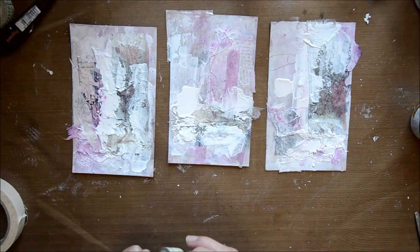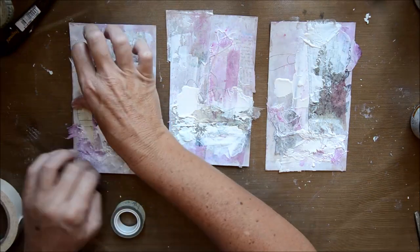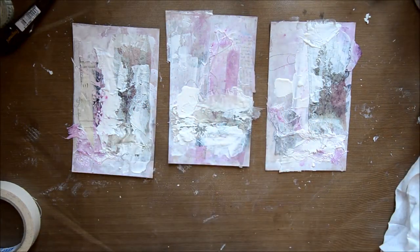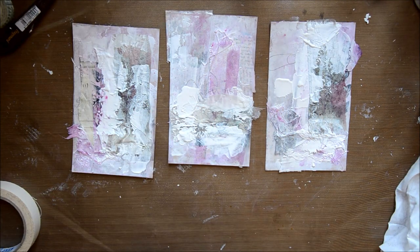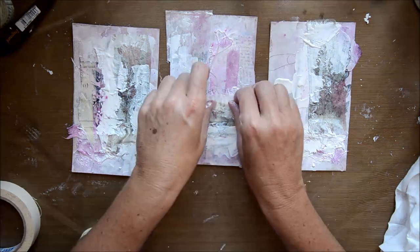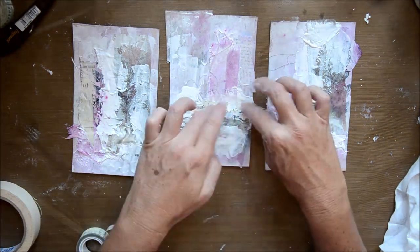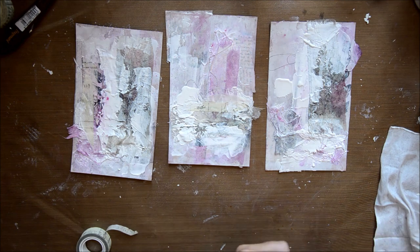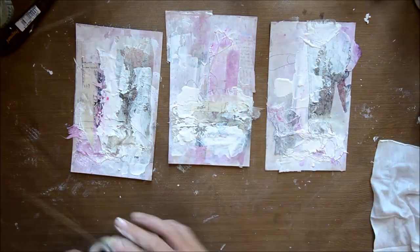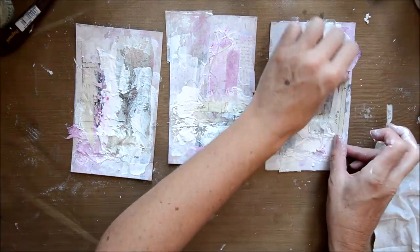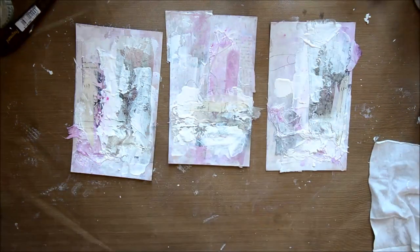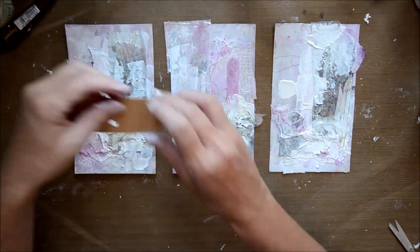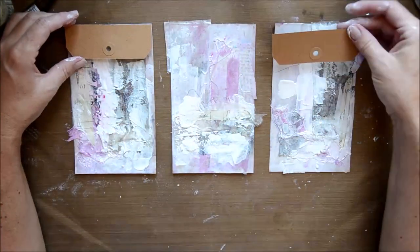Then adding a little bit more washi tape and a little bit more masking tape. Some of the elements sometimes I find I lose what I like in the piece, so I just bring them back in. I really like the washi tape look, so I'm just bringing it back into the piece.